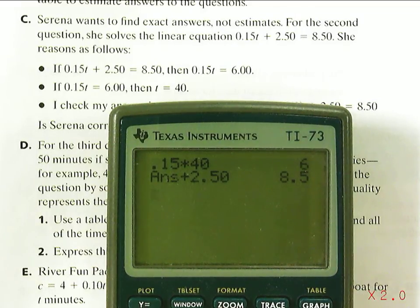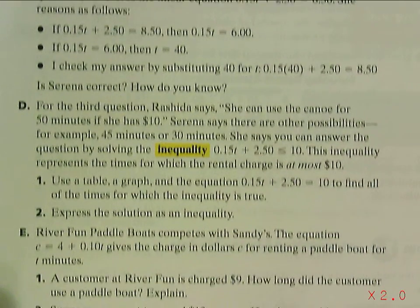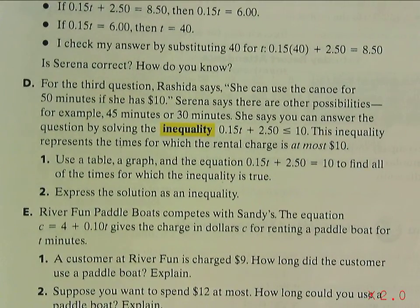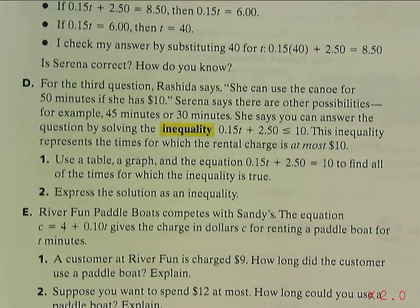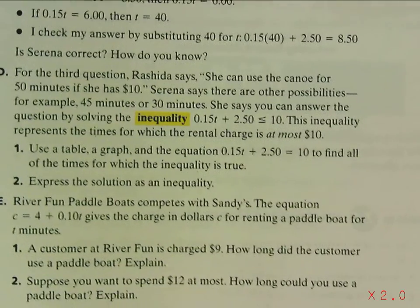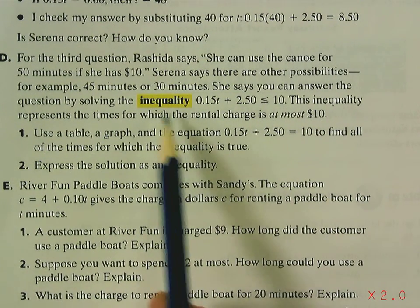You can always check those answers. Moving on to Part D, she can use the canoes for 50 minutes if she has $10, but really she can use the canoes for 50 minutes or less with $10. There's a whole bunch of possibilities — 45 minutes, 30 minutes, 31 minutes, all kinds of different times. We can actually express this problem as what's called an inequality.